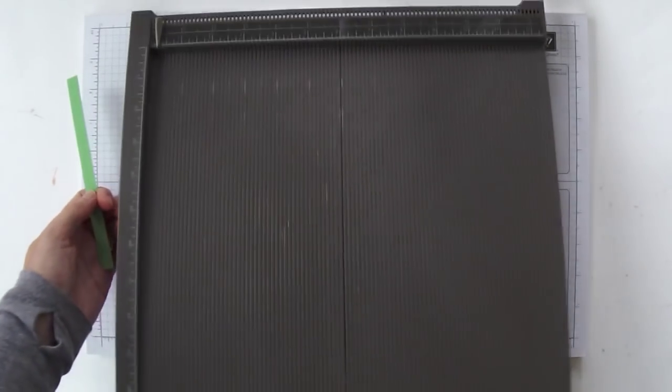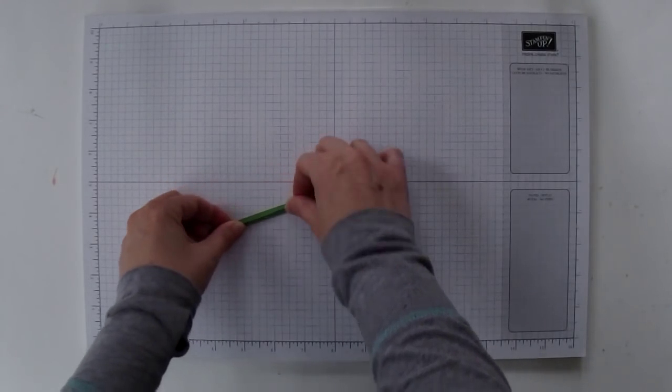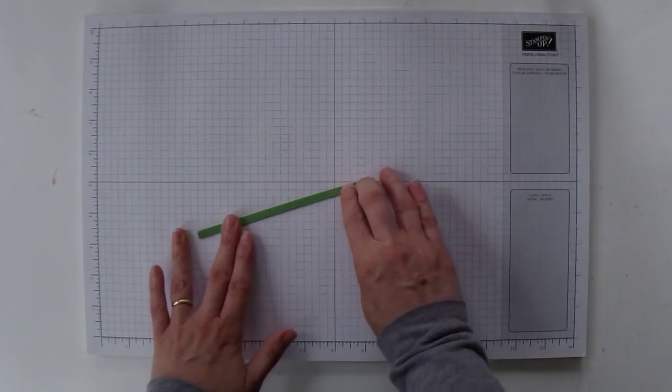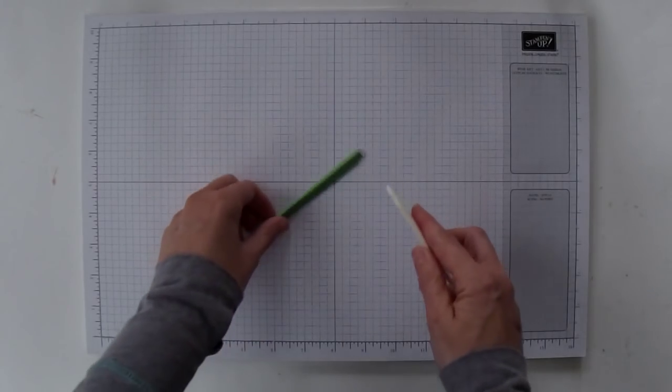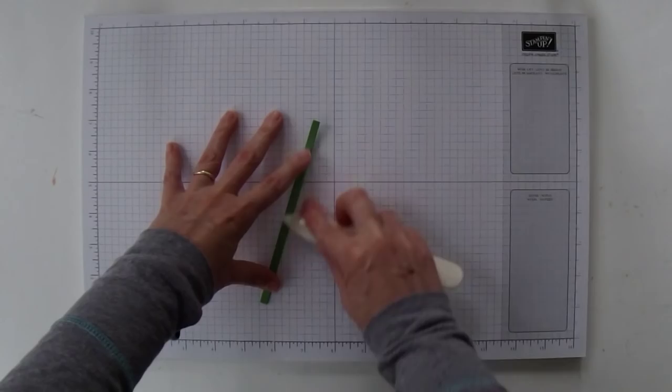You can put your scoring board aside and then you're just going to fold along that score line. You can use your bone folder to really crease that fold.